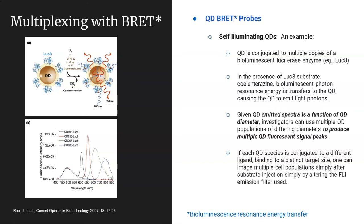One final example of an FLI probe is a combination of two classes we've already discussed: quantum dots that are self-illuminating — or quantum dot BRET — where BRET is bioluminescence resonance energy transfer. In this scenario, a quantum dot has been ligated to a series of luciferase enzymes — in this example, Luc8. The luciferase enzyme, in the presence of substrate, generates light. Luc8 generates blue light that doesn't travel far, but it does serve to excite the quantum dot. None of the Luc8 light escapes beyond the quantum dot — it is all taken in and used to excite the quantum dot to emit its much longer wavelength of light.